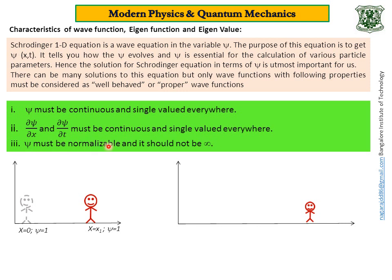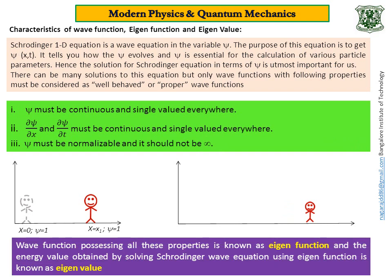Next, ψ must be normalizable and it should not be infinity. That means probability cannot be infinity. Well, wave function possessing all these properties is known as eigenfunction. Eigen means proper. And the energy value obtained by solving Schrödinger wave equation using the eigenfunction is known as eigenvalue. So eigenfunction is a proper function and eigenvalue is an expression for energy obtained using eigenfunction.